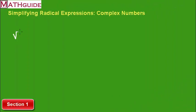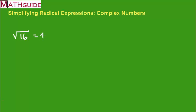Let's review what square roots are and how they behave. This is the square root of 16. The square root of 16 is 4. How do I know that's true? I could check it — squaring and square root are opposite functions. 4 squared means 4 times 4, which is 16. So that 4 has to be the right answer.